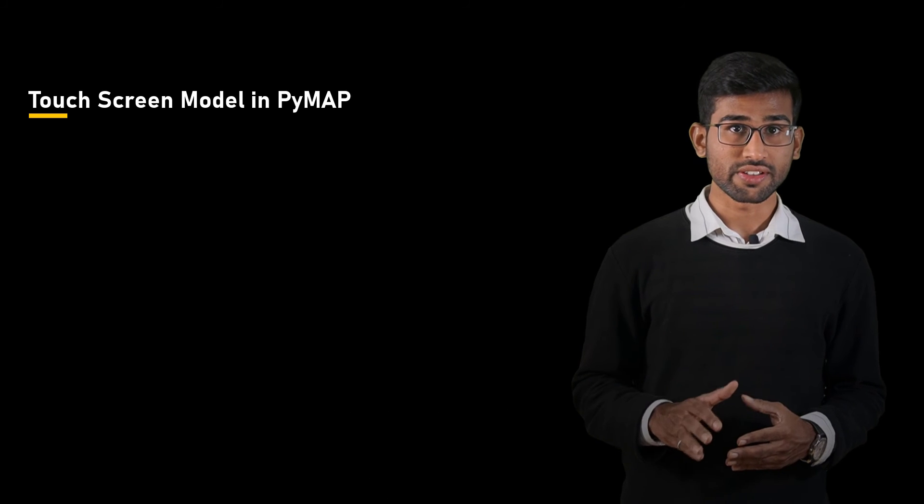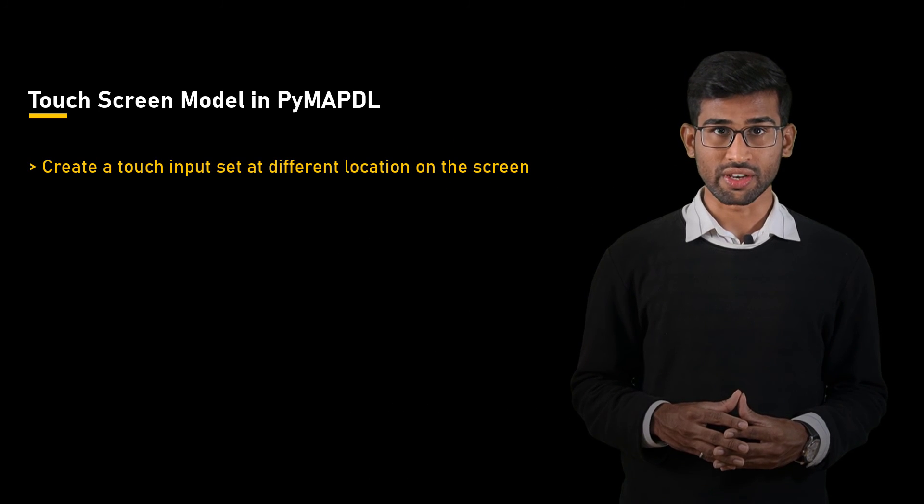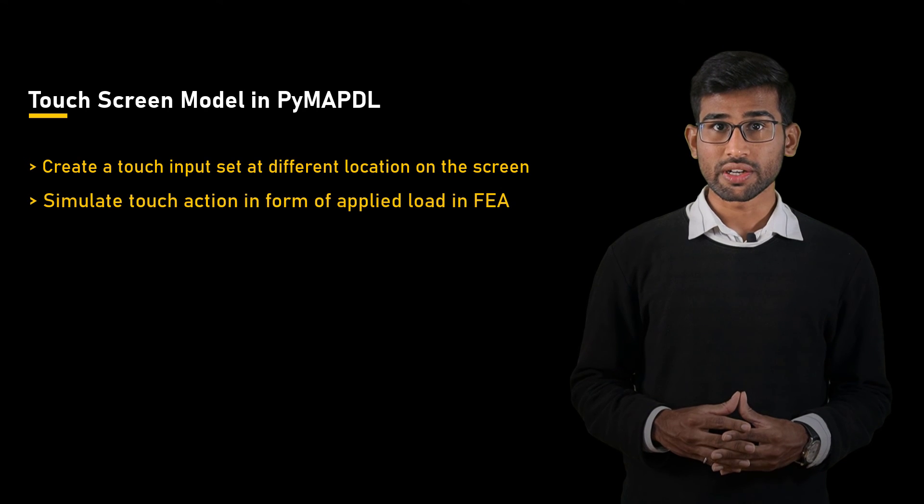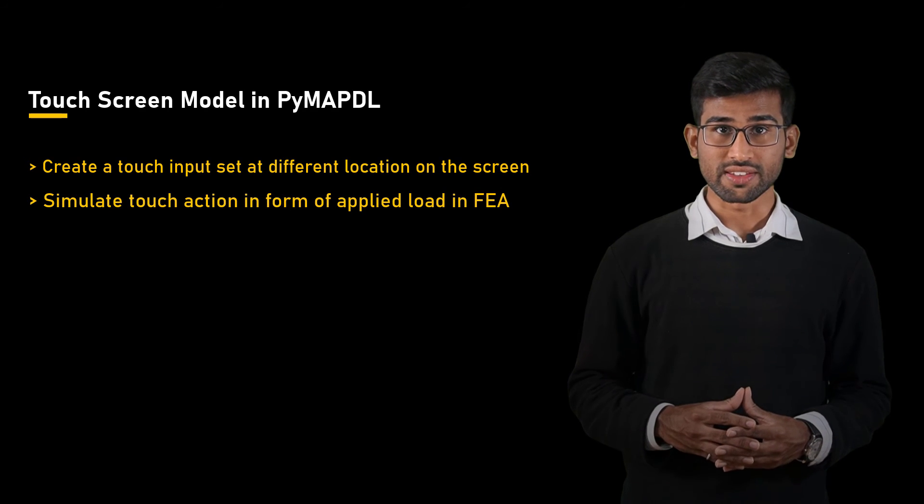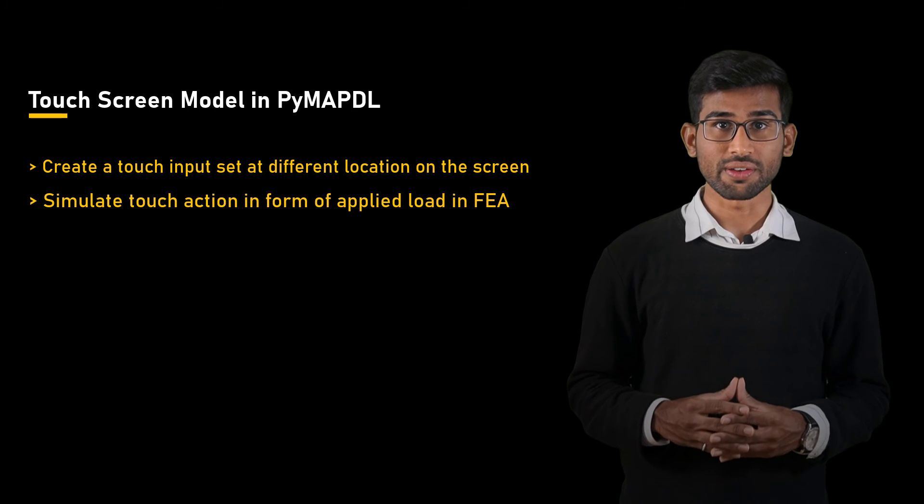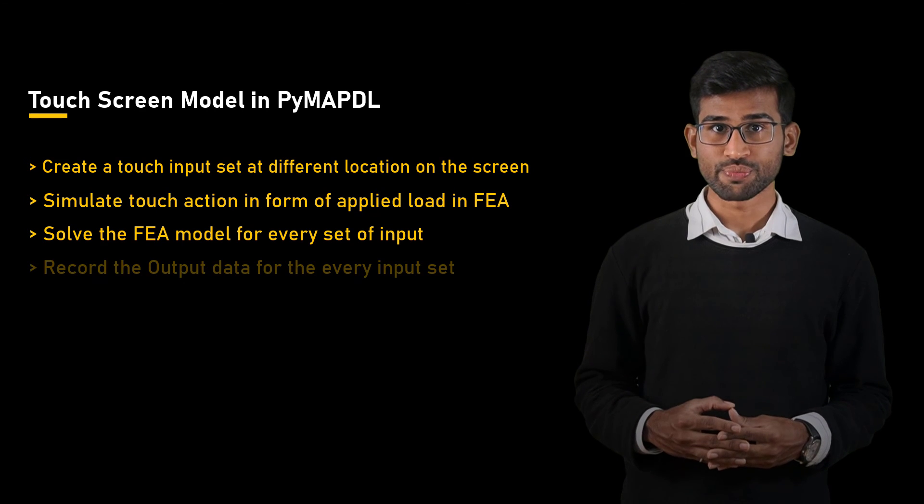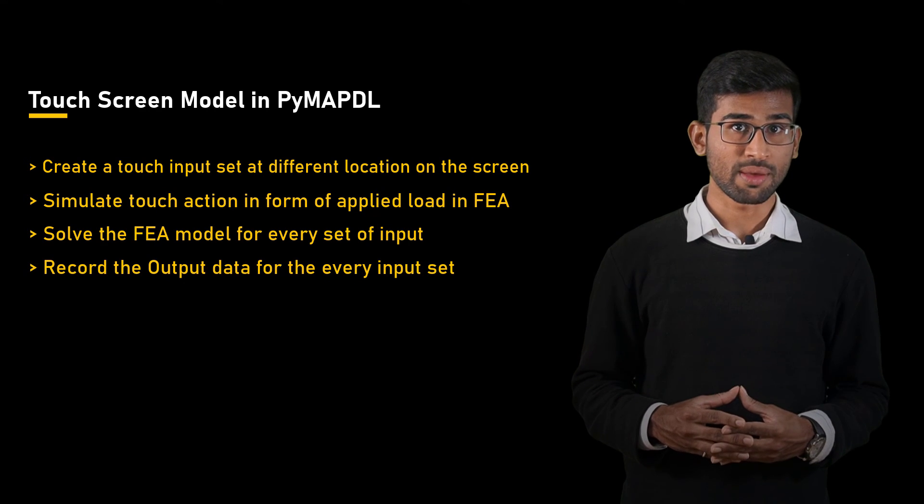To achieve this, we first need to generate a set of inputs, which in this case would be the different locations of touch on the screen. Then we need to simulate touch actions at the location. And since touch on the screen is just a load applied at the point, this can be defined in an FEA model. Finally, we need to solve the model for every set of inputs and generate output dataset for training the ML model.